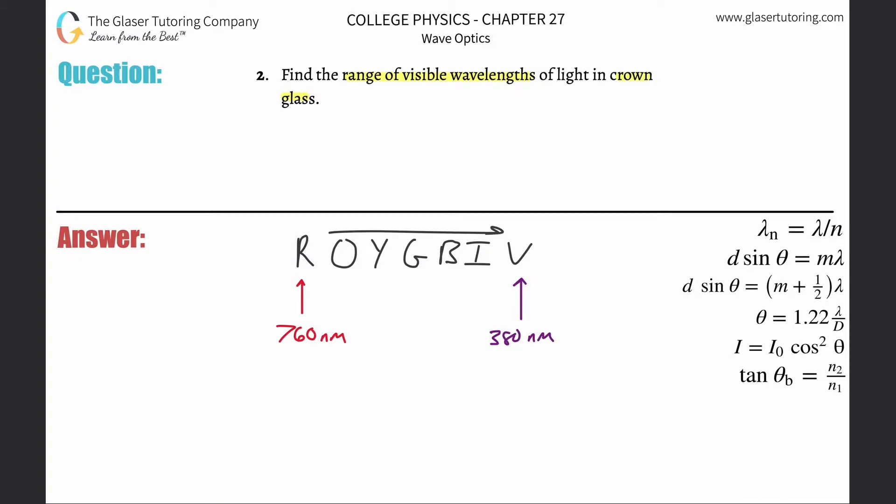The wavelength of red light in a vacuum is 760 nanometers. The wavelength of violet light is shorter—it's approximately 380 nanometers. These are both wavelengths in a vacuum.